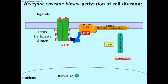An inactive enzyme, oddly but appropriately as we'll see, named MAP kinase kinase kinase, then binds to the receptor-RAS complex and itself becomes an active enzyme, and thereby an amplification cascade begins.